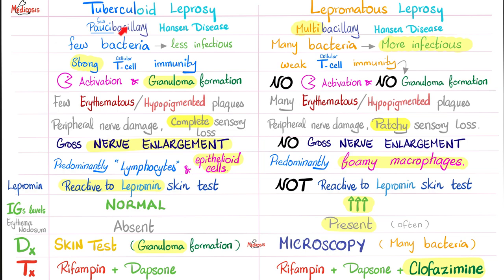Moreover, since tuberculoid has massively activated macrophages and granulomas, your nerves will be enlarged to the naked eye. However, with lepromatous leprosy, the nerves are not visibly enlarged. In tuberculoid, activated macrophages become epithelioid cells, and T lymphocytes are predominant. But in lepromatous leprosy, it's not the histiocytes of a granuloma — just foamy macrophages. Reaction to the lepromin skin test: reactive with tuberculoid, non-reactive with lepromatous. The levels of immunoglobulin are normal with tuberculoid, because T lymphocytes do not produce antibodies — that is the job of the B lymphocytes.